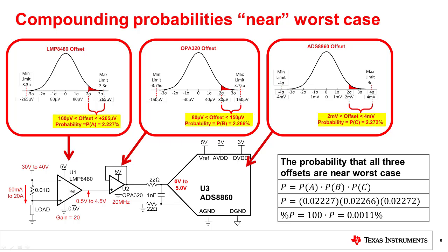You can see that for each device, the probability of being near worst case is about 2%. Since the three distributions are random and uncorrelated, the compound probability that all three events occur simultaneously is the product of the three probabilities. Stepping through the math, you can see the probability that all the devices are near worst case is 0.0011%. You can imagine that as the number of components in the system increases, the probability that they are all at the worst case value is very small. So directly adding the worst case offset for each device isn't the best approach for understanding a system's total error.